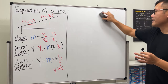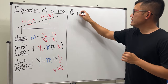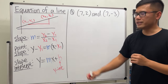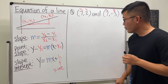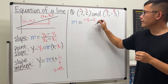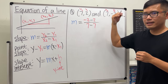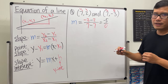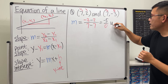Example 3 gives a vertical line. Points are (7, 2) and (7, −3). Label x1 = 7, y1 = 2, x2 = 7, y2 = −3. Slope: m = (−3 − 2)/(7 − 7) = −5/0, which is undefined.